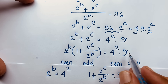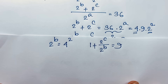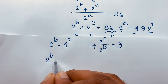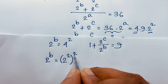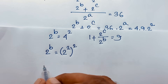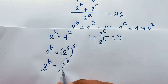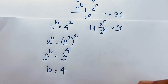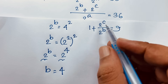Since 2^b = 4² = (2²)² = 2^4, and the bases are the same, b = 4. That is our next answer: b = 4.